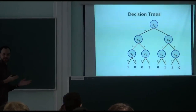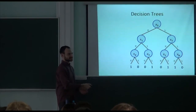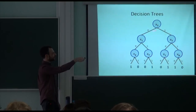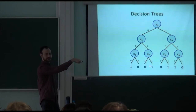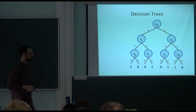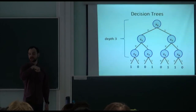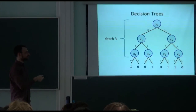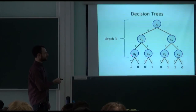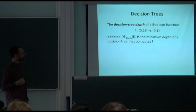Another important model is decision trees, shown here by example. You start at the top, read a variable like x3, and branch left or right depending on its value, and so on. The leaves give the output values. The depth of a decision tree is the maximum number of variables read on any path — this example is depth 3. The same variable can appear on different branches, but we assume you don't read the same variable twice on any single branch.